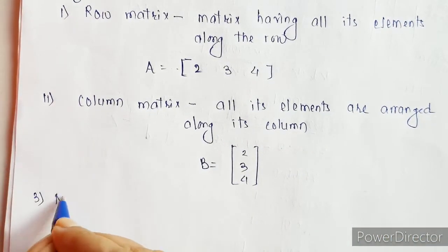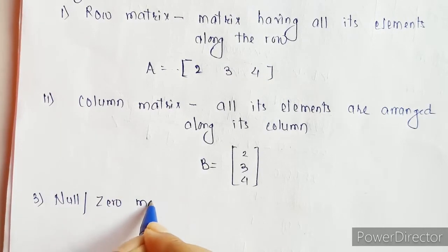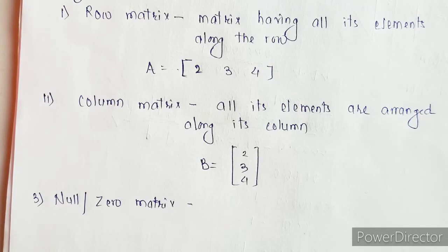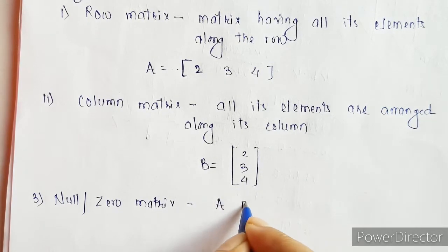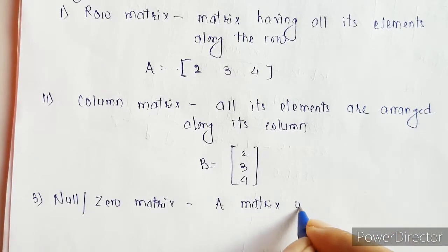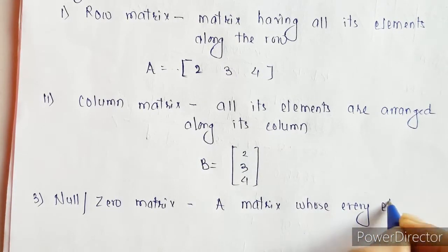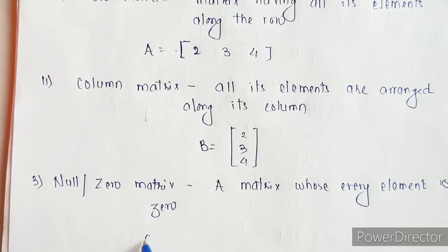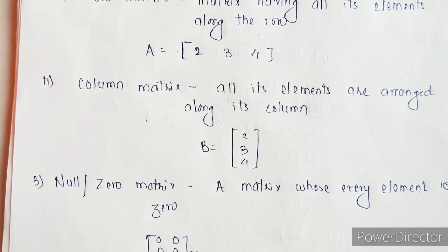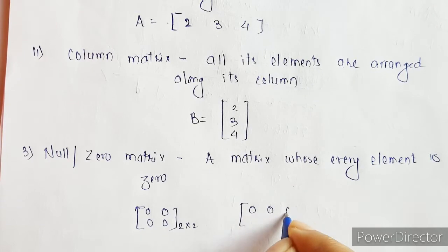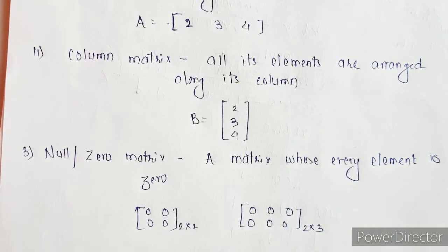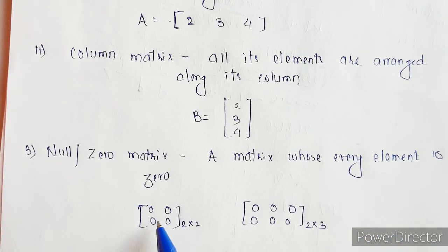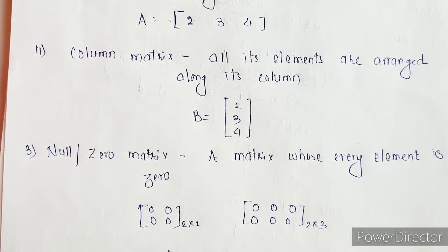Next is the null matrix, also called the zero matrix. The order of this matrix can be anything, but every element in the matrix must be zero. It can be 2 cross 2, 2 cross 3, or 3 cross 3 — but every element has to be zero. Only then is it called a null matrix or zero matrix.